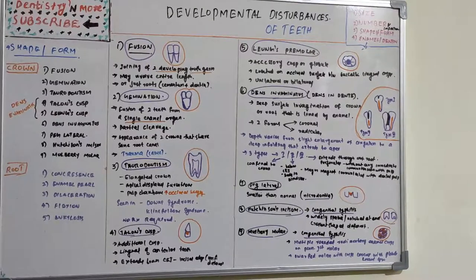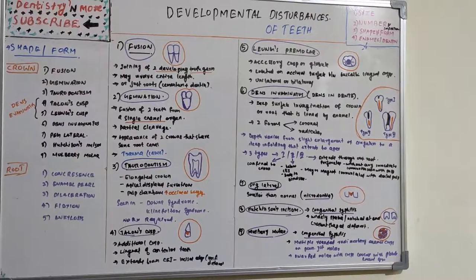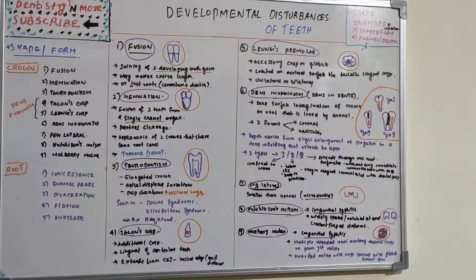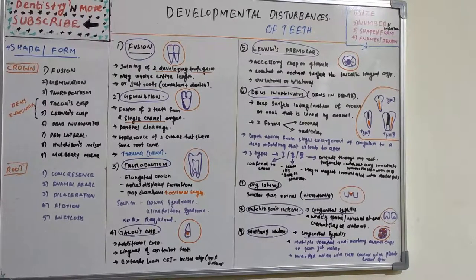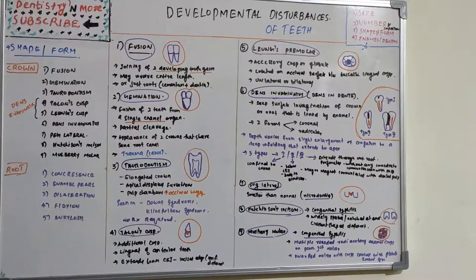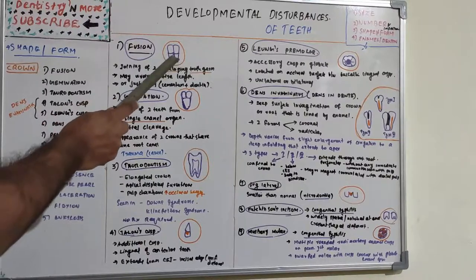This is a very important session because each of these can be asked as a short note — not even one can be kept aside as unimportant; all are frequently asked. Now let's start with fusion. As the name suggests, fusion is the joining of two developmental tooth germs.